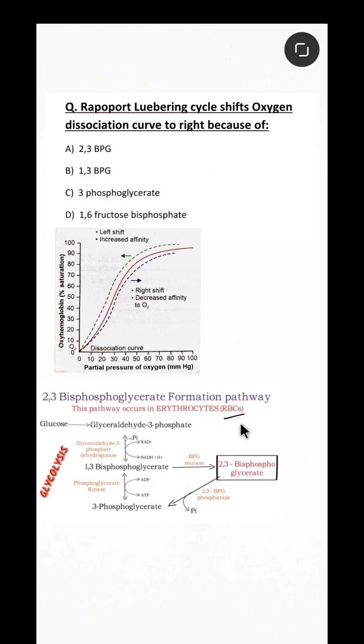Here you can see that in RBC, the sixth step of glycolysis is bypassed and there is a formation of 2,3-bisphosphoglycerate. This combines with hemoglobin and reduces its affinity towards oxygen, which shifts the oxygen dissociation curve to the right side.